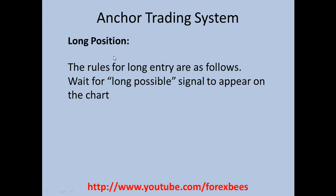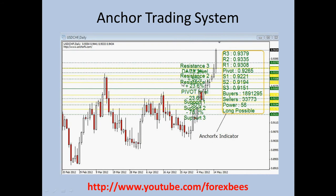The entry rule for a long position is: wait for a long possible signal to appear on the chart. The indicator gives a long possible signal at certain points. If you see that signal, enter the trade at that point. These are the different support levels and these are the different resistance levels that this indicator gives. Whenever the long possible signal appears, enter a long trade.